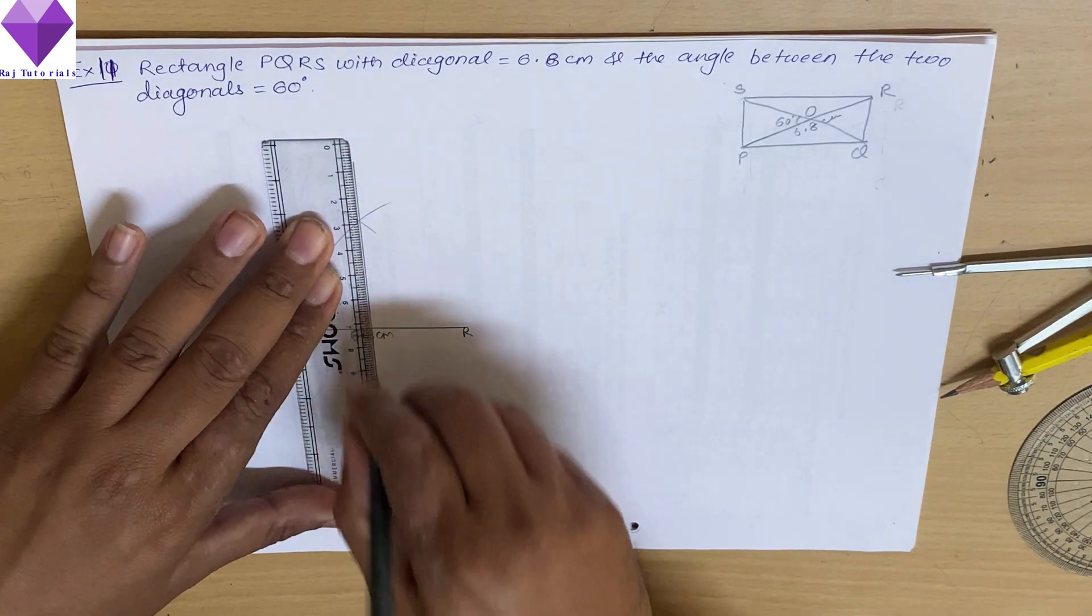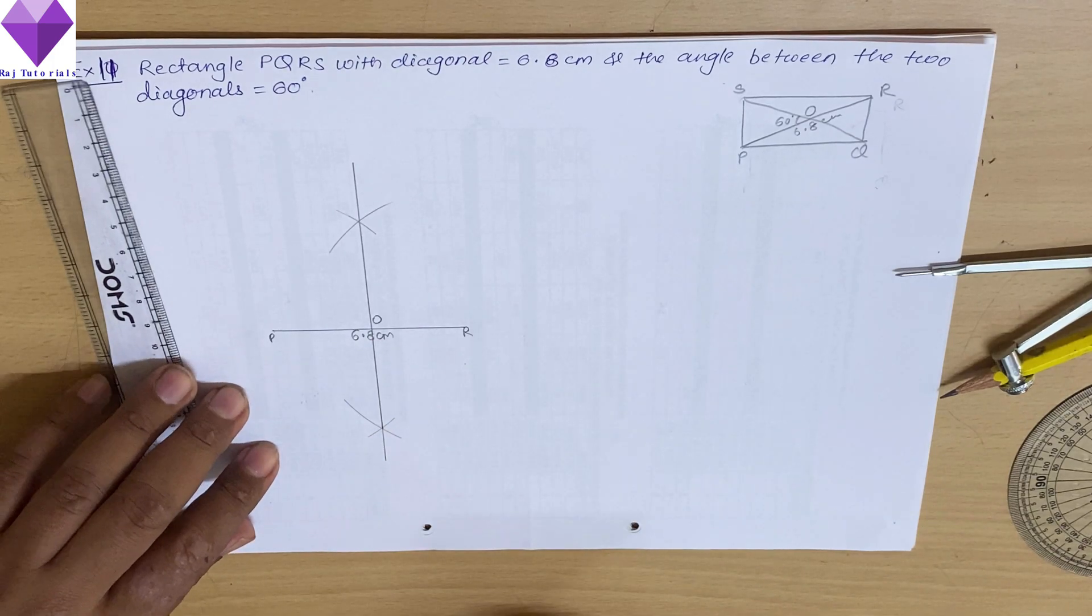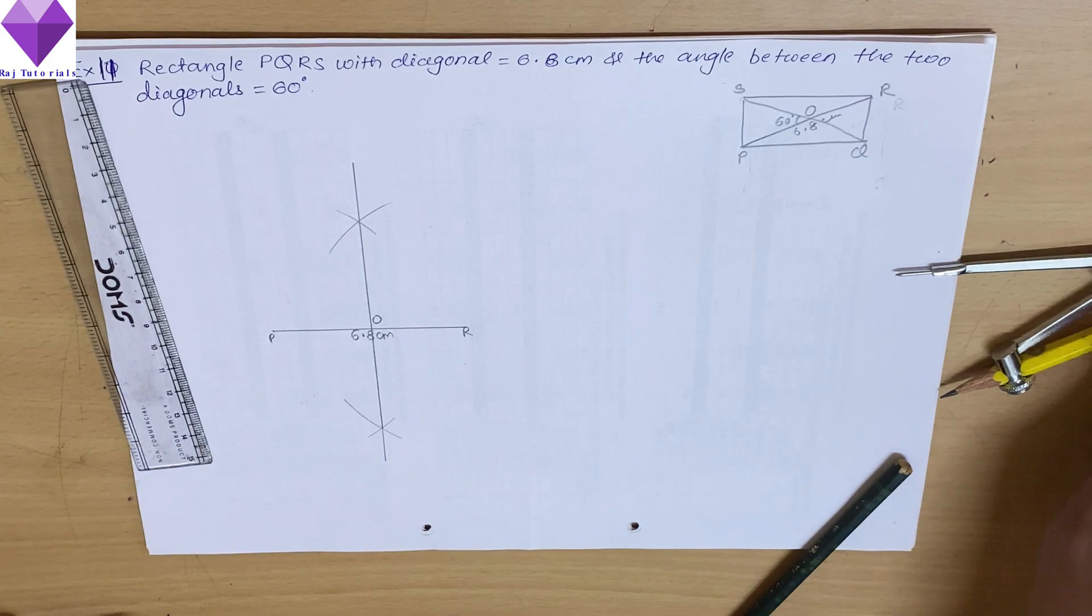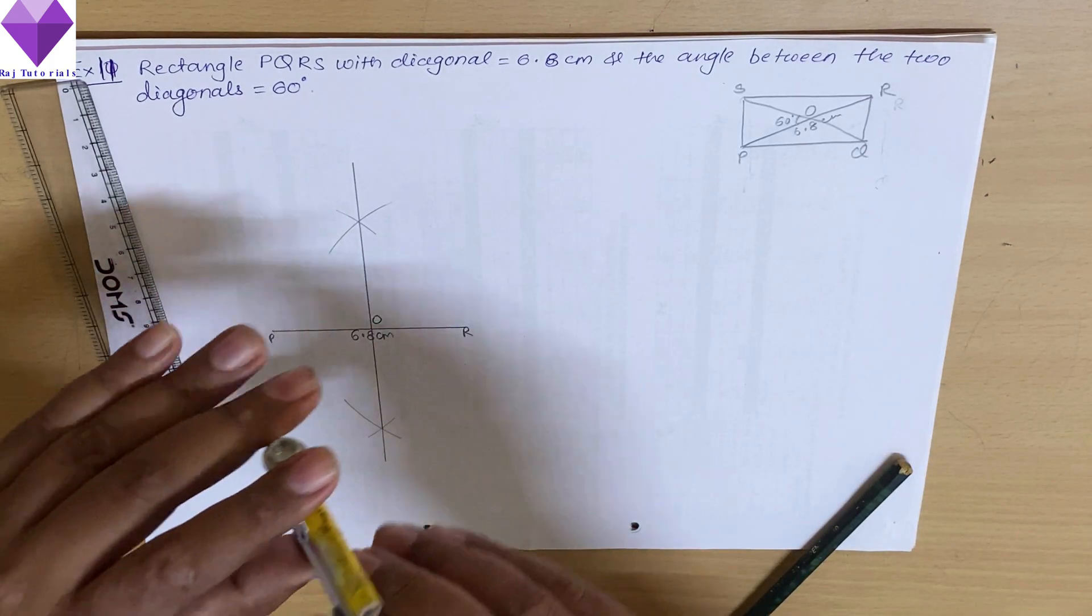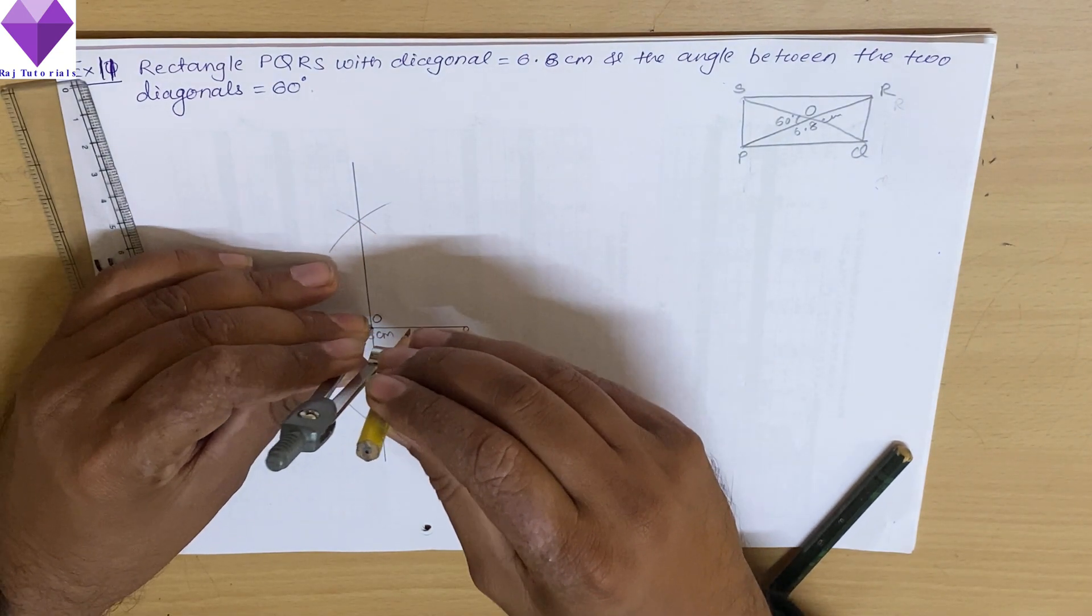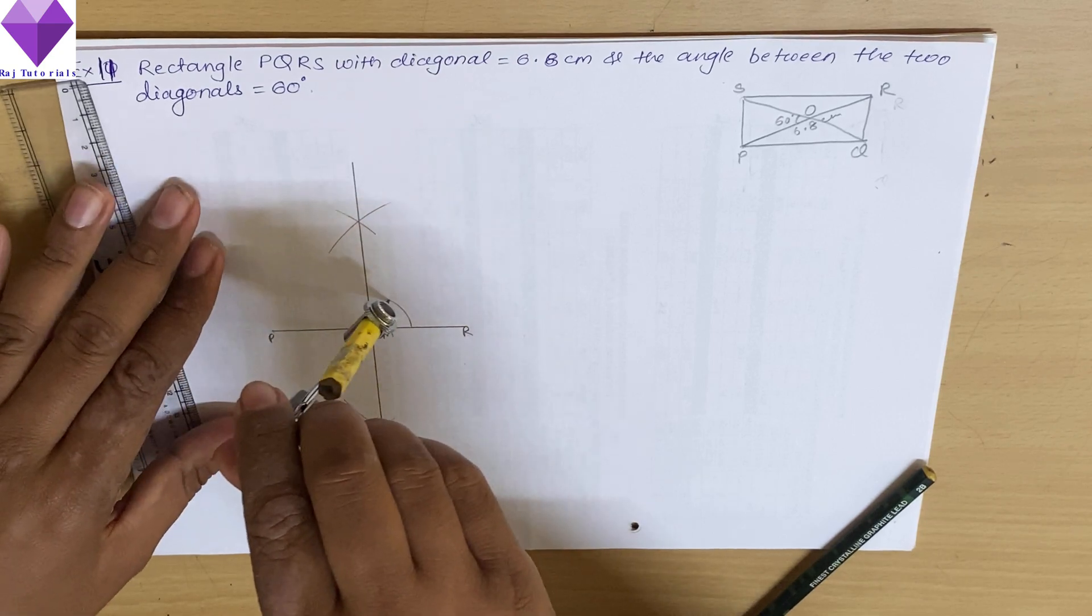If you remember, in the rectangle one property is that the diagonals always bisect each other. Now with center at O I will draw a semicircle to get the 60 degree angle.